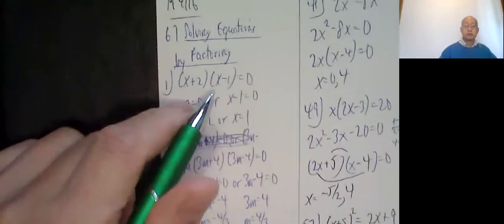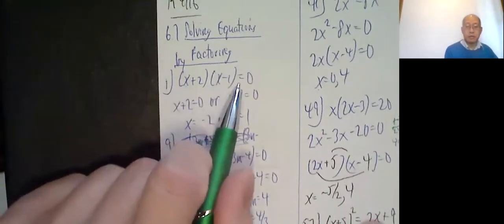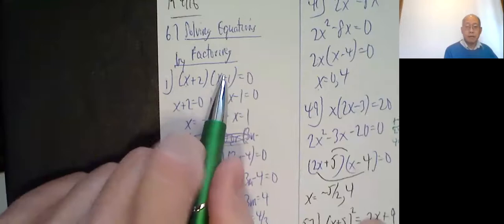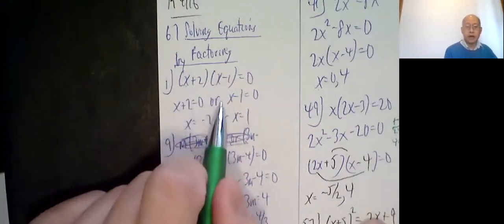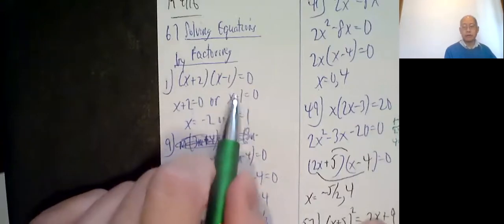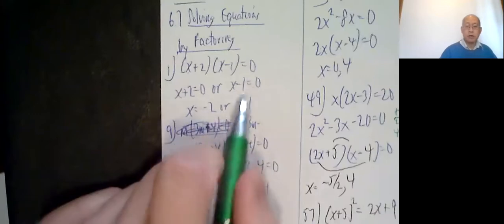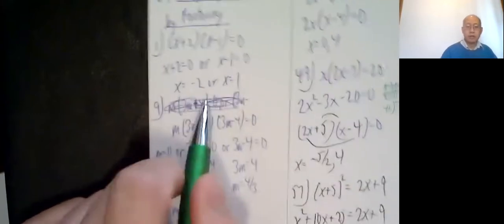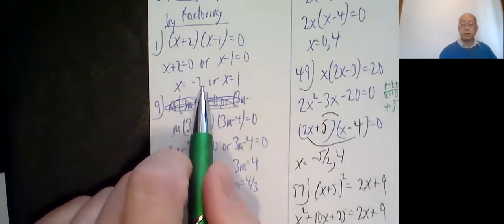We're doing the zero factor property now, solving equations by factoring. Number one: x plus two times x minus one equals zero. That's something times something equals zero, so that means x plus two, the first one equals zero, or the second factor x minus one equals zero. Subtract two, x equals negative two, or add one, x equals one. Notice there are two solutions. Quite often you have more than one solution for these problems.